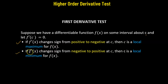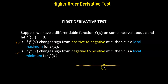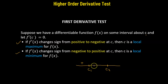If the derivative changes sign from negative to positive, then c is considered a local minimum. Generally, we get some critical points — say c1 and c2. In the first derivative test, we check the value to the left-hand side of c1. If it is positive to the left and negative to the right, the sign changes from positive to negative, so c1 is a point of local maxima.